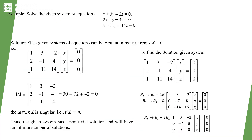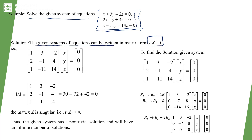Let's take another example: solve the given system of three equations. This system is homogeneous because the right-hand side is 0. We write it as Ax = 0 with coefficient matrix [1, 3, -2; 2, -1, 4; 1, -11, 14] and unknowns x, y, z. Since B = 0, there is no need to write the augmented matrix.